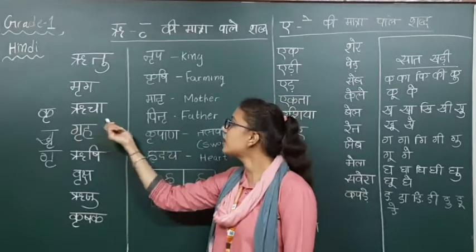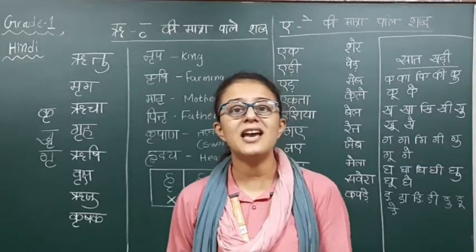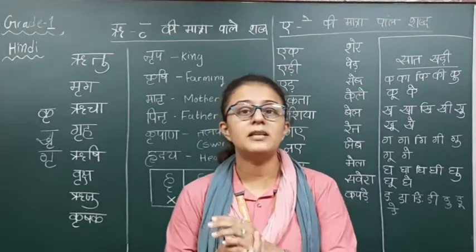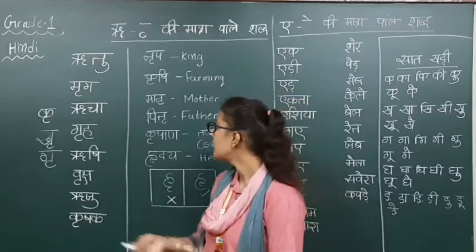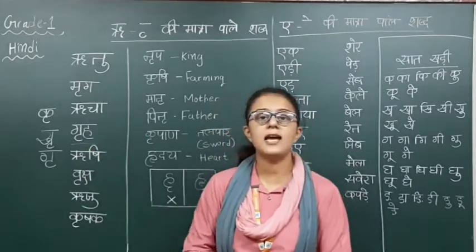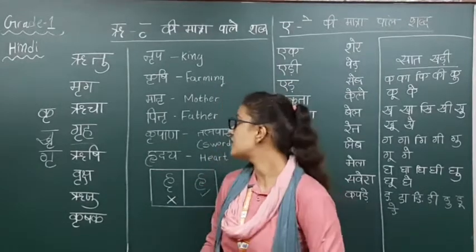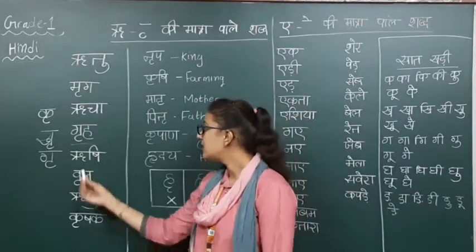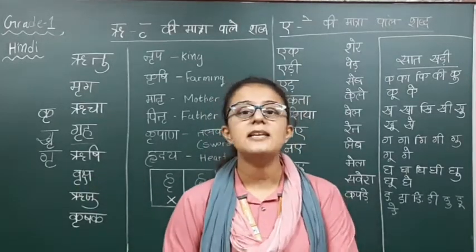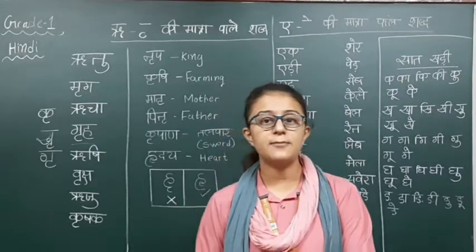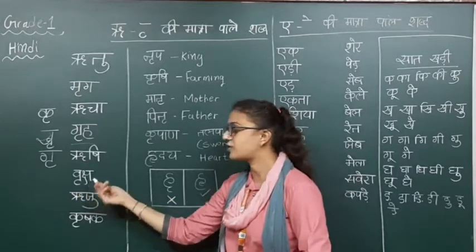Next is rucha. Rucha kisi ka naam bhi ho sakta hai. Rucha yaani ki mantra — jo mantra bolti hai, usse bolti hai rucha. Next is griha. Griha yaani ki ghar, home, right? Usse bolti hai griha. Next is rishi — rishi kya hai? Saadhu, sant, saints, right? Jisse hum bolte hai saadhu baba, usse bolti hai rishi.